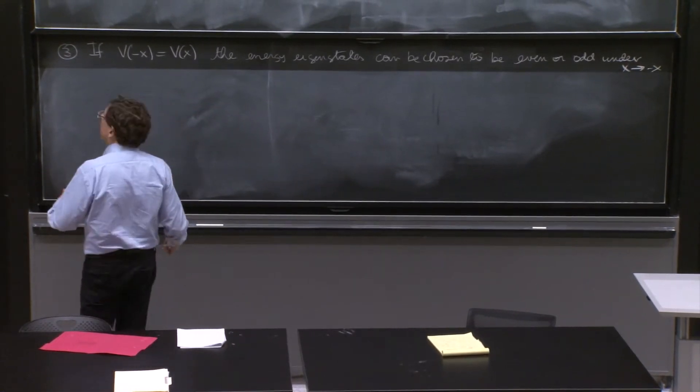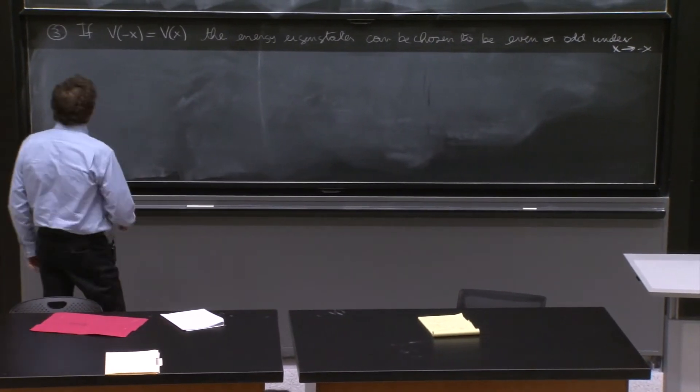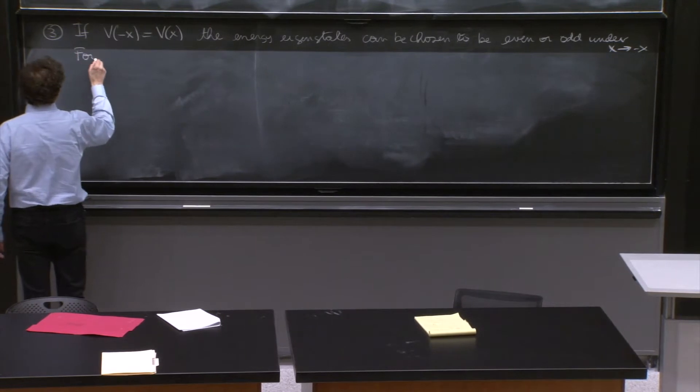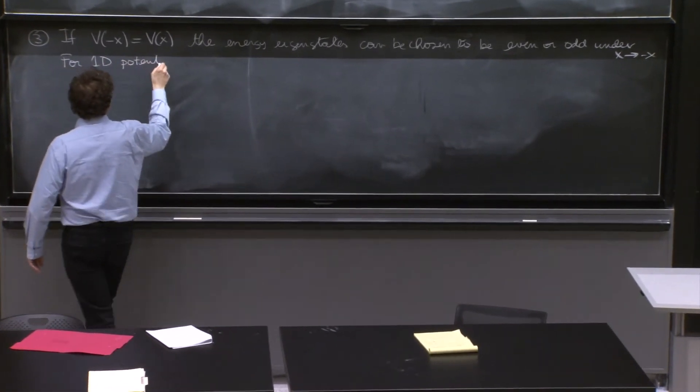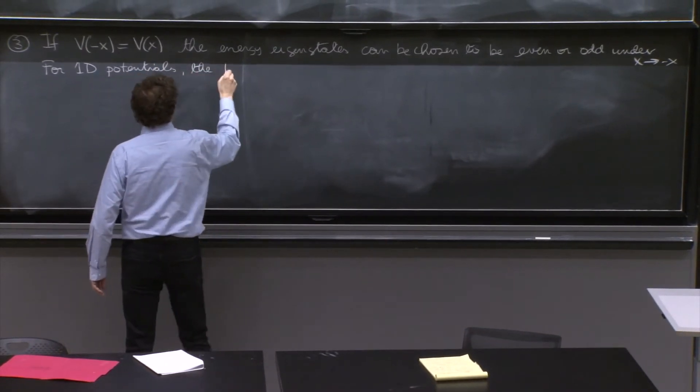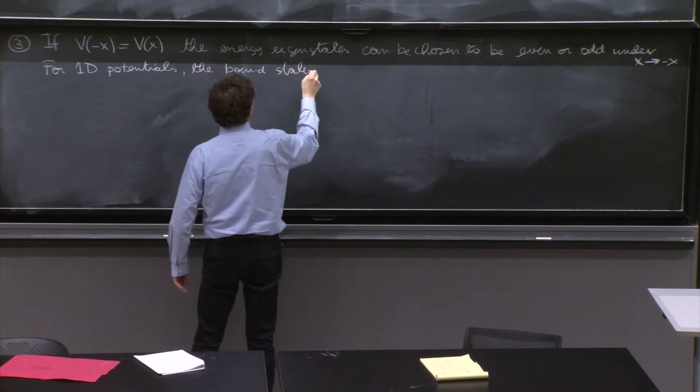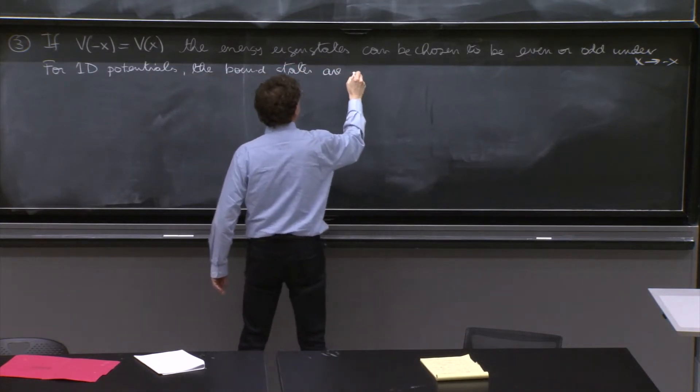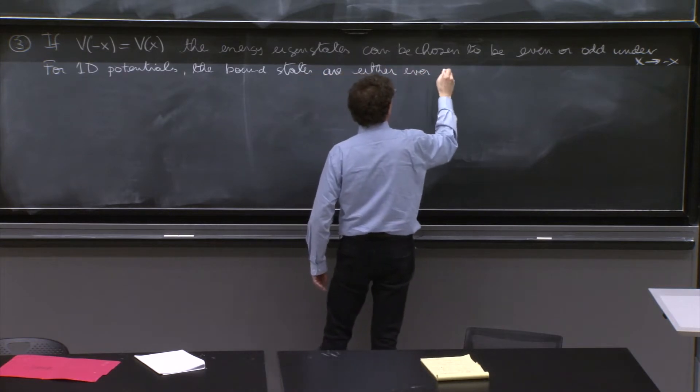So that's analog of the first sentence in property number two. But then comes the second sentence that you can imagine what it is: for 1D potentials, the bound states are either even or odd.